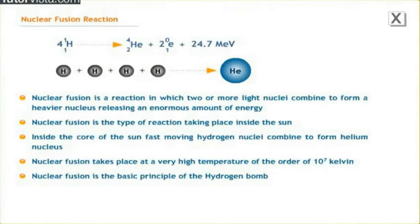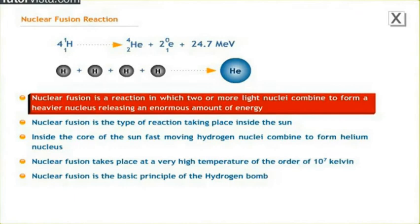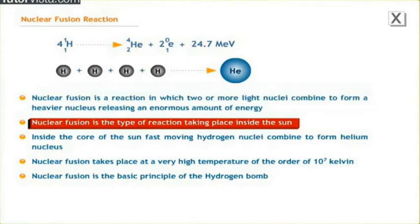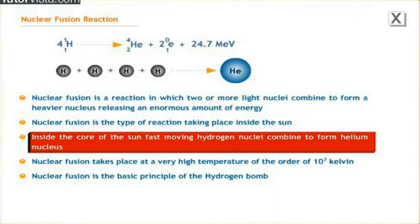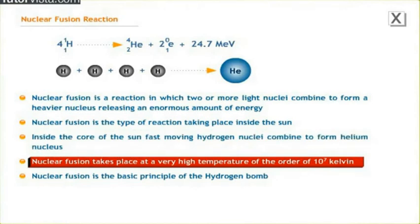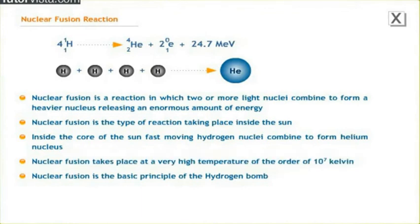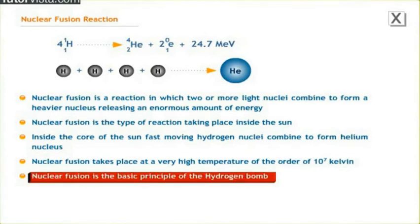Nuclear fusion is a reaction in which two or more light nuclei combine to form a heavier nucleus, releasing an enormous amount of energy. Nuclear fusion is the type of reaction taking place inside the sun. Inside the core of the sun, fast-moving hydrogen nuclei combine to form a helium nucleus. Nuclear fusion takes place at a very high temperature of the order of 10 to the power 7 Kelvin. Hence, nuclear fusion reaction is called a thermonuclear reaction. Nuclear fusion is the basic principle of the hydrogen bomb.